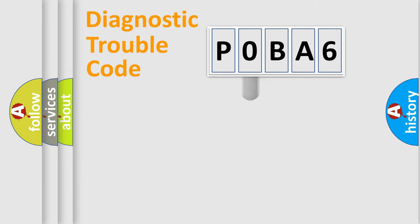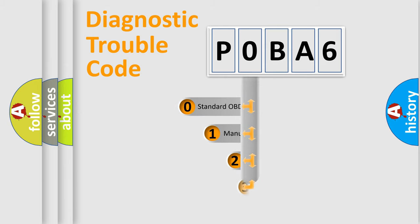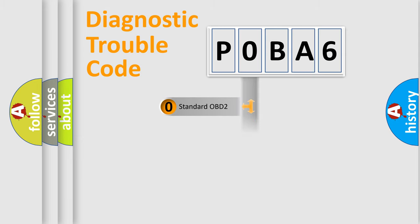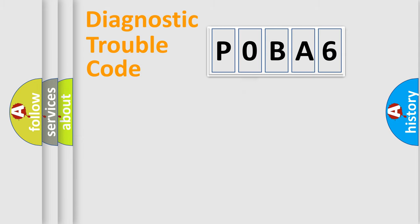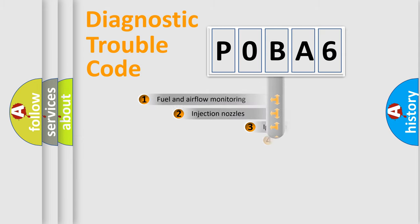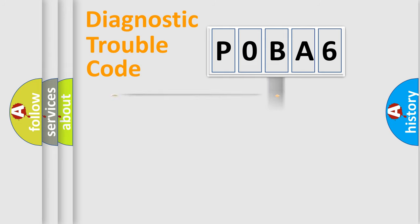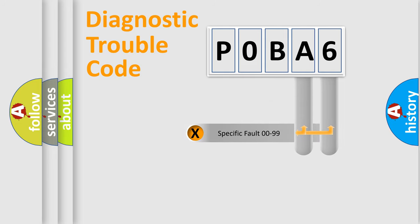This distribution is defined in the first character of the code. If the second character is expressed as zero, it is a standardized error. In the case of numbers 1, 2, or 3, it is a more manufacturer-specific expression of the car error. The third character specifies a subset of errors. This distribution is valid only for the standardized DTC code.